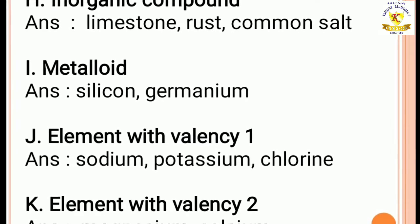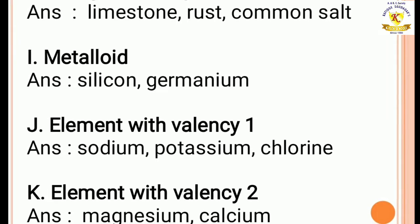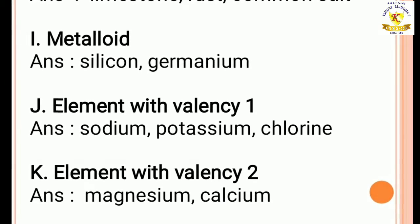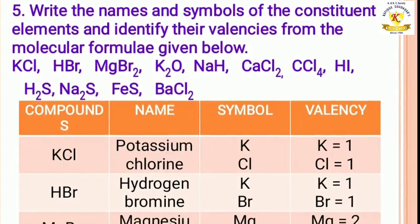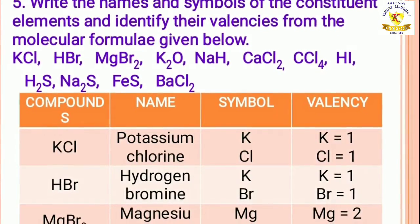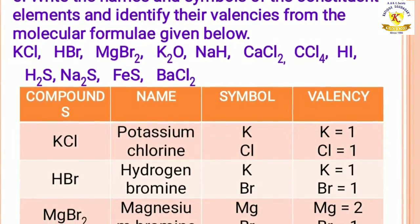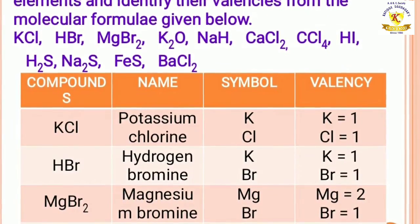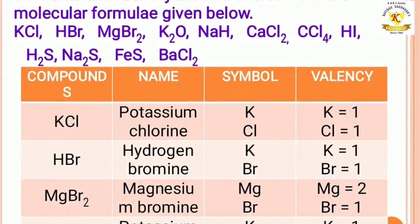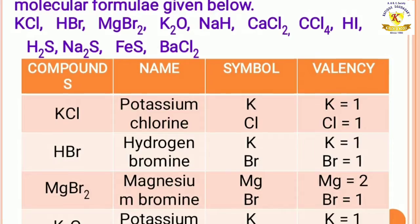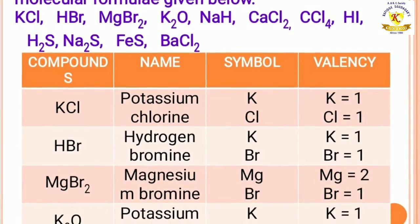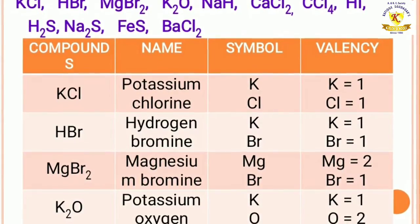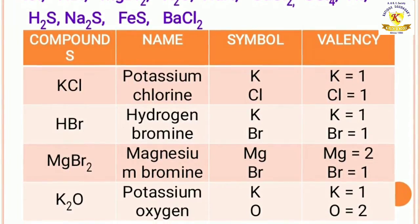Elements with valency 1: sodium, potassium, chlorine. Elements with valency 2: magnesium, calcium. Question number 5: write the names and symbols of the constituent elements and identify their valencies from the molecular formulae given below. For KCl — potassium symbol K with valency 1; chlorine symbol Cl with valency 1. Similarly you need to write the rest as given.